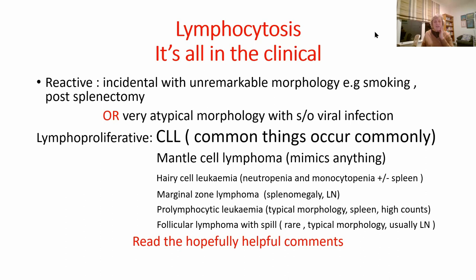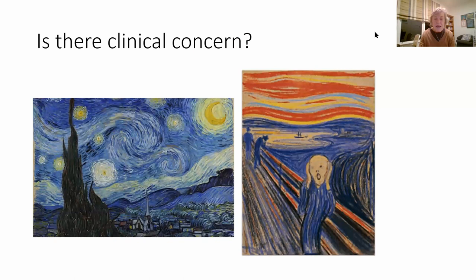Marginal cell lymphoma and prolymphocytes are much rarer. When the scientist or haematologist comments on the lymphocytosis, they'll give you advice — they'll look at cumulative lymphocyte counts, clinical details if you've provided them, other counts, and rate of progression. What we're saying in those comments is: please keep these patients for as long as possible. So if there's clinical concern — if the patient's lost weight, got night sweats, has a huge spleen — that's very different.